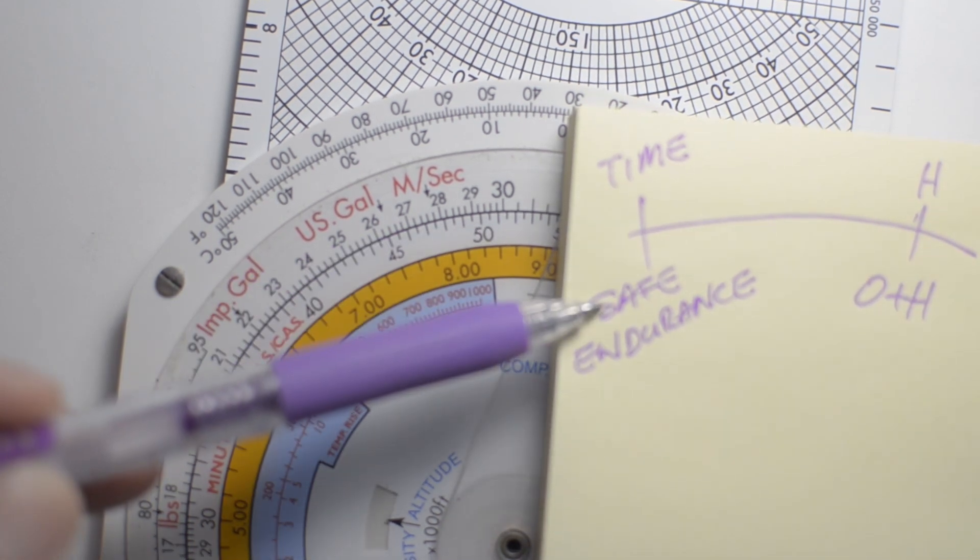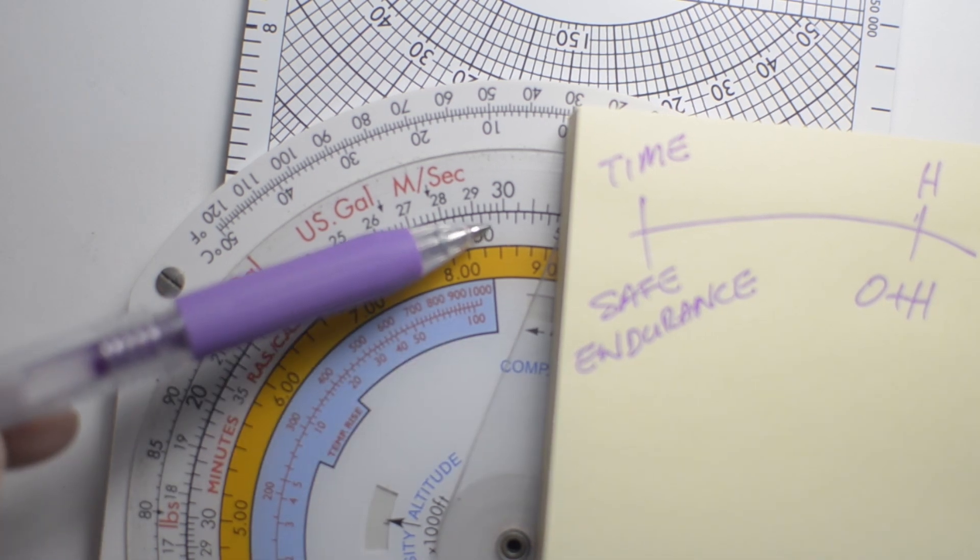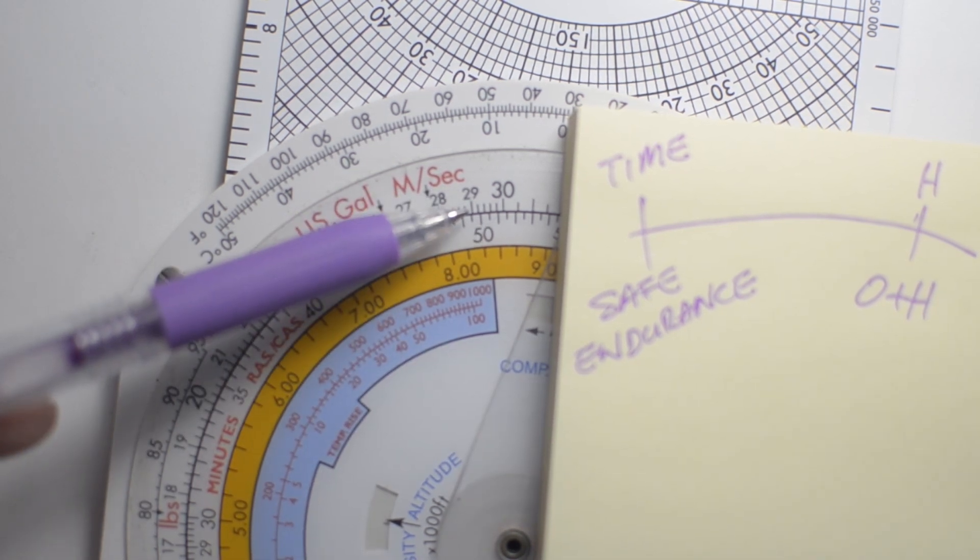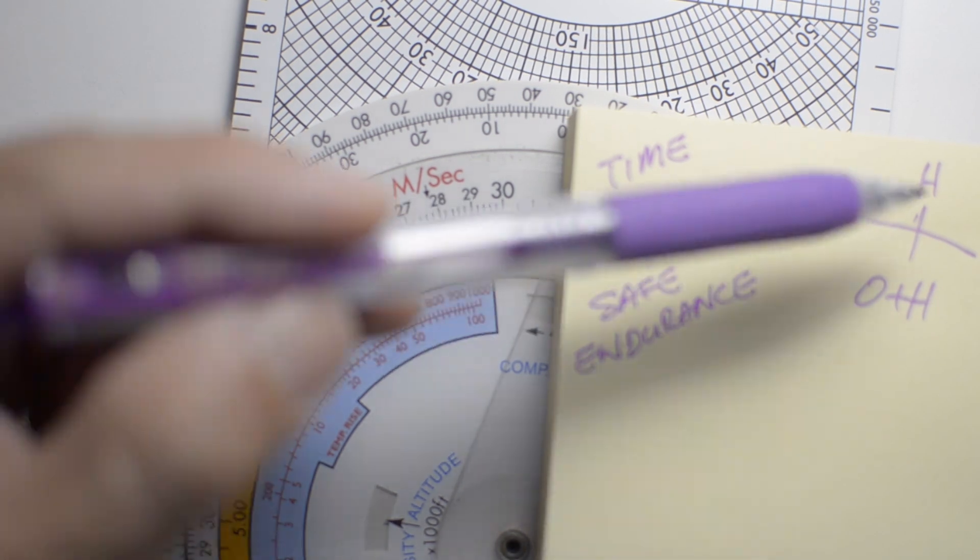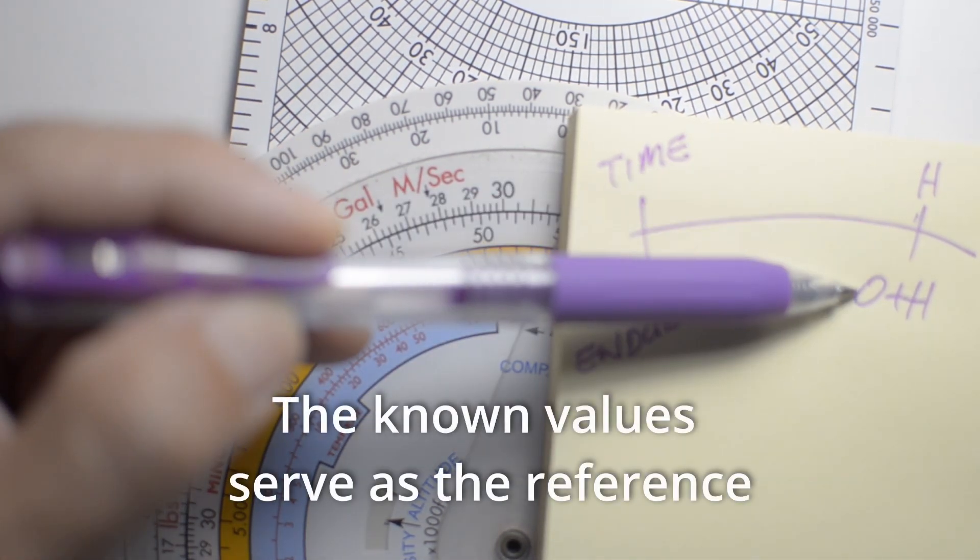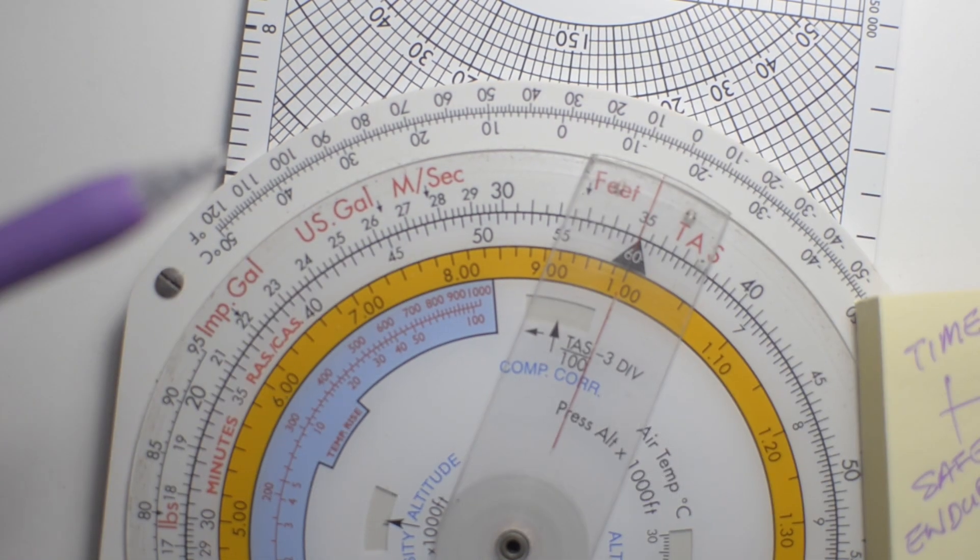So we're going to line up safe endurance of five hours, and we're not going to move anything because we've already lined up the ground speed home against the ground speeds out and home. And as we can see,